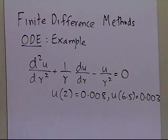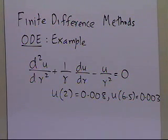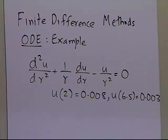What you want to be able to do is find out what u is as a function of r, because u is the dependent variable and r is the independent variable, and you want to find what u is at different points.